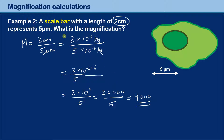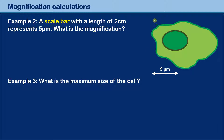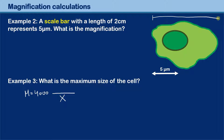That was example two. We note the magnification of 4,000 because we need it for example three. I'll erase the math. The next question is: what is the maximum size of the cell? We remember the magnification is 4,000. We want to find the specimen size — that is our x value — and at the top we need the size of the cell in centimeters.